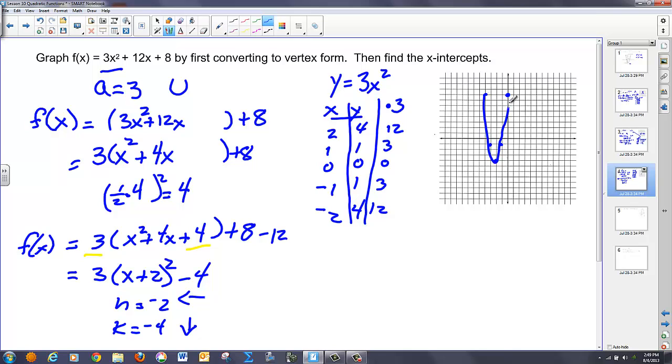However, the second part of this equation asks that I find the x-intercepts. Well, to find the x-intercepts, I know y = 0. So if I set y equal to 0 and solve this, I've found those intercepts. Now, you'll notice that these intercepts don't look like integers.